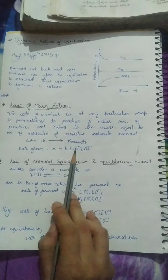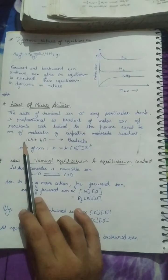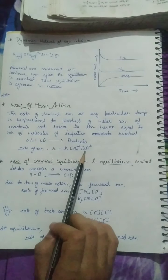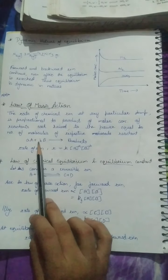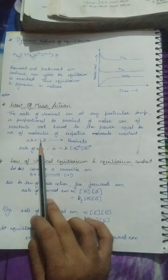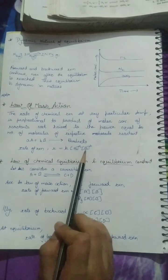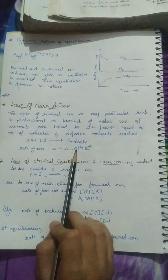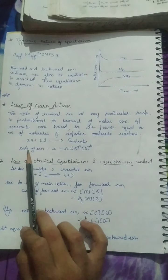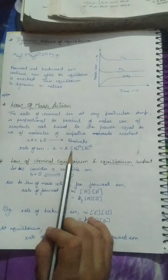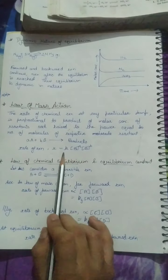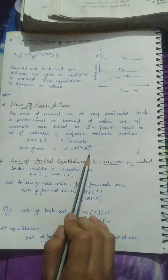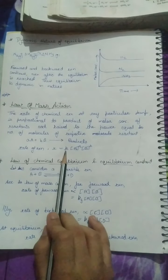Reactant A has number of molecules equal to small a, and reactant B has number of molecules equal to small b. So when we write the expression for rate of reaction, here K is the proportionality constant.